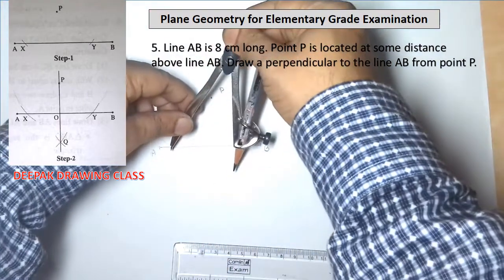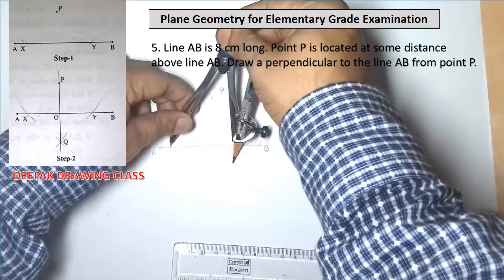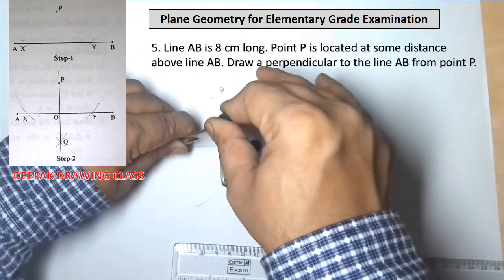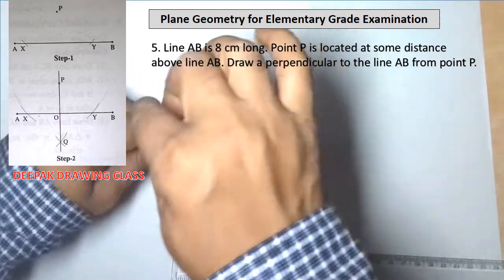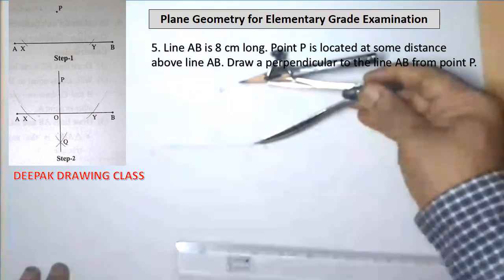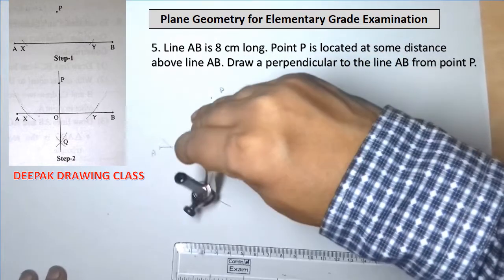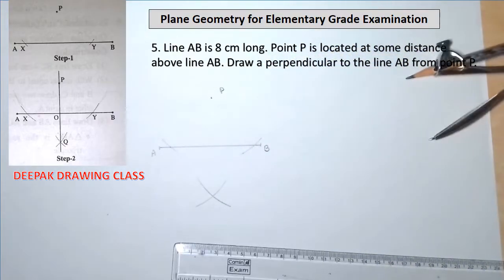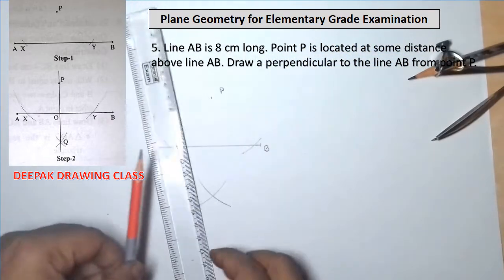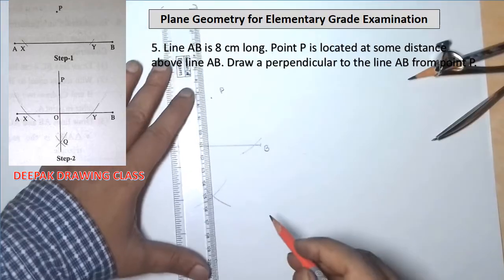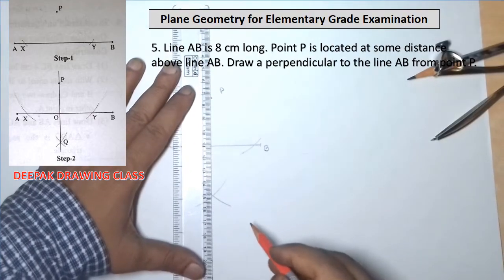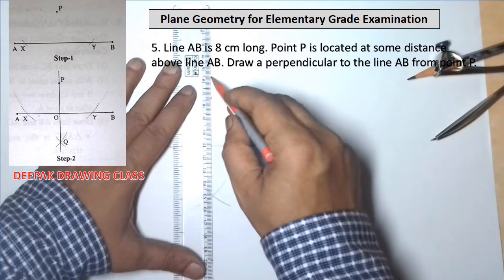With centers X and Y and a suitable radius, draw two arcs on the other side of line AB intersecting each other at point Q. With point P, draw a line passing through the arc, that is point Q.